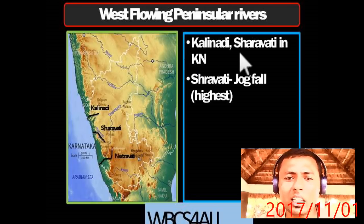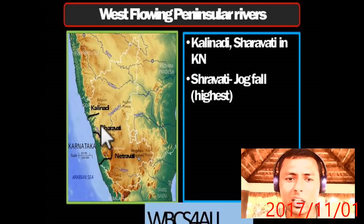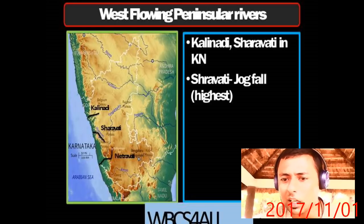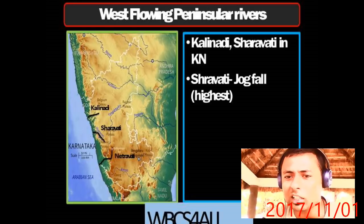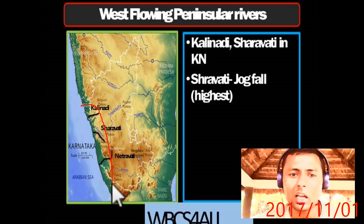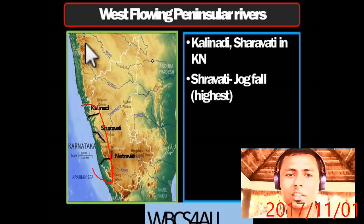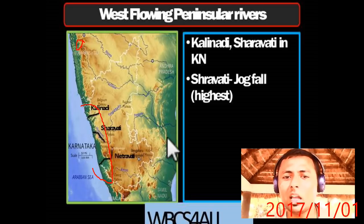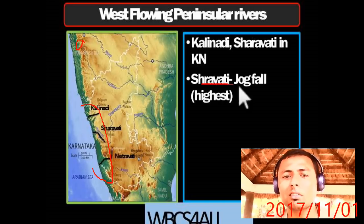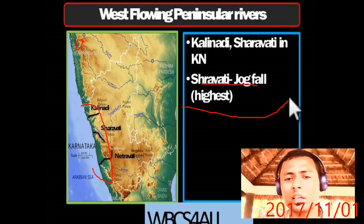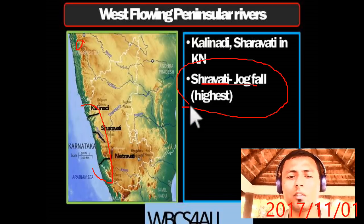In Karnataka, the west-flowing rivers are Kali, Nadi, Sharavati, and Netravati — three rivers. In Goa we saw two rivers: Zuari and Mandvi. In Karnataka there are three. The Sharavati River is notable because the Jog Falls, also known as Gersoppa Falls, is the highest waterfall in India and is located on the Sharavati River in Karnataka.